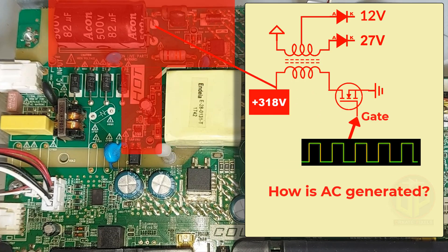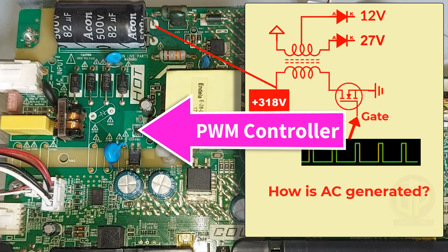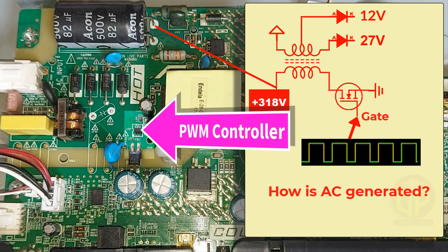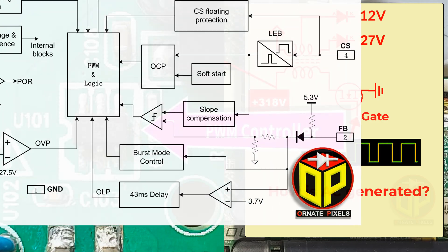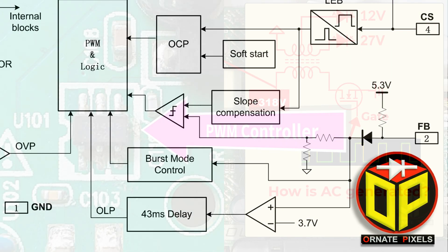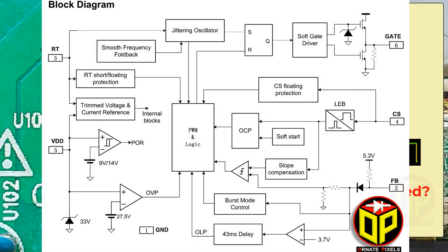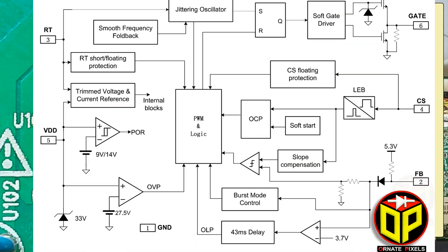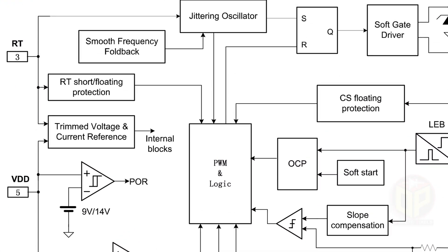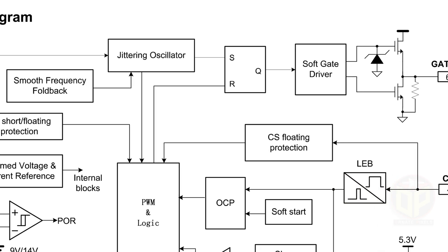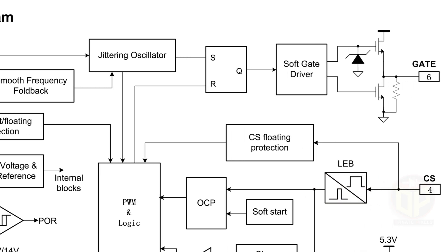Here is a high-performance PWM controller. It looks like an ant but its actions are like an elephant. Inside this PWM IC, many circuits are integrated to produce smooth and safe DC voltage output.